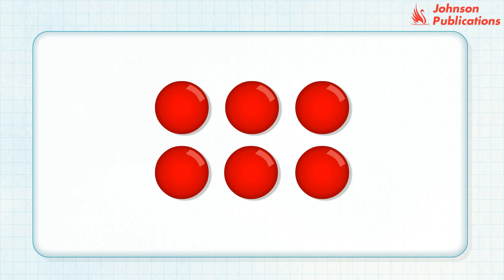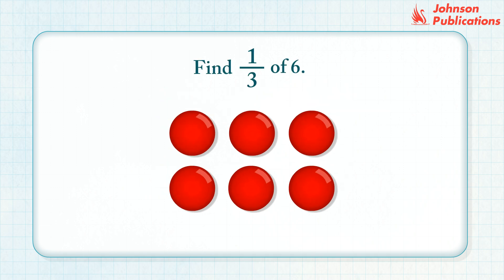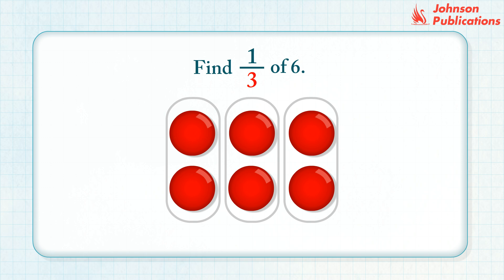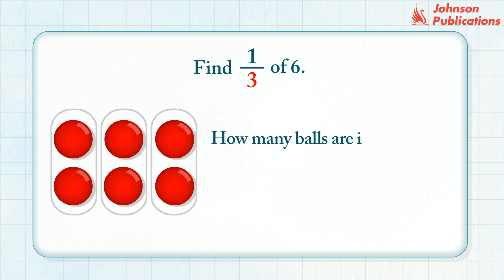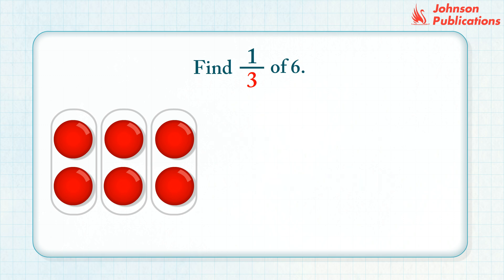Look at the group of six balls. Find one third of six. Since the denominator is three, divide the group of balls into three equal parts. How many balls are in each part? We have two balls in each part.